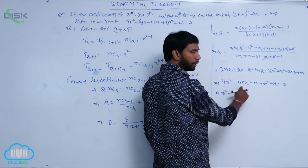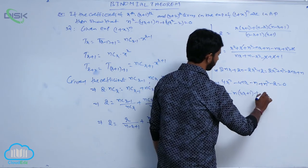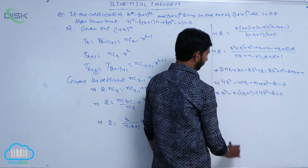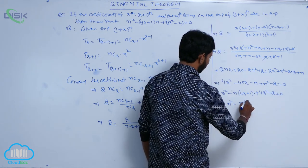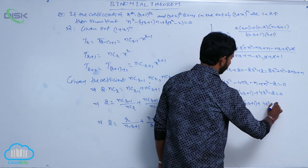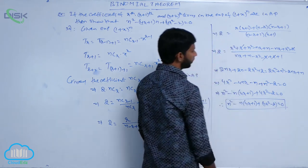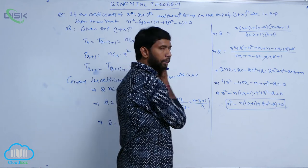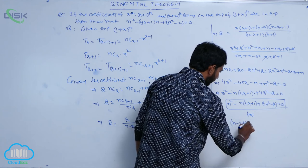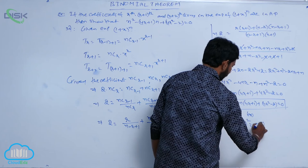This can also be written as (n - 2r)² = n + 2. In the second and third terms, taking -n as common: n² - n(4r+1) + 4r² - 2 = 0. Therefore the required relation is n² - (4r+1)n + 4r² - 2 = 0, which is proved.